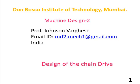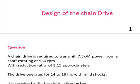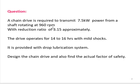Today we will look into the design of the chain drive. A chain drive is required to transmit 7.5 kW. The shaft is rotating with a speed of 960 RPM. The reduction ratio is 3.15. The drive operates 14 to 16 hours with mild shocks and provides drop lubrication. Design the chain drive and also find out the actual factor of safety.